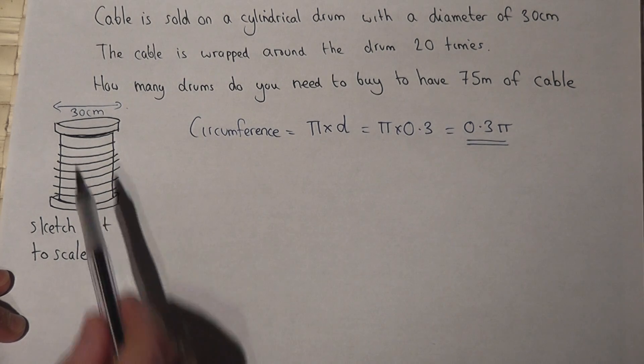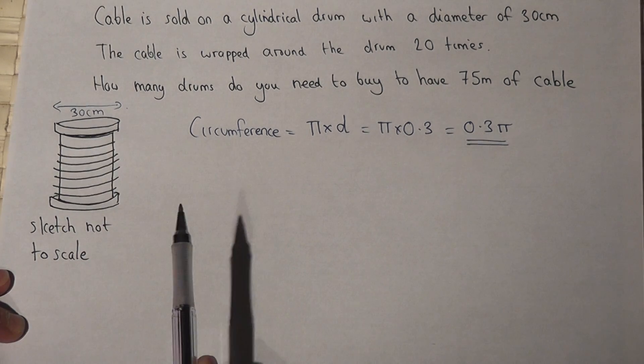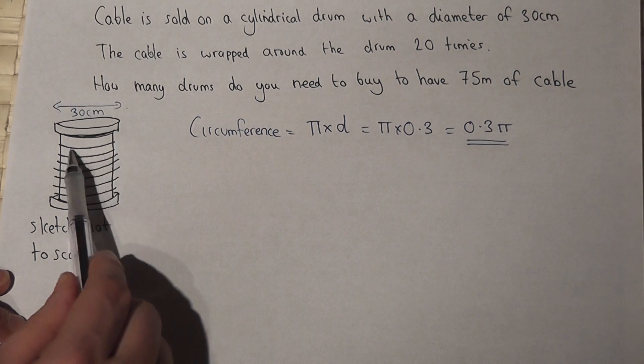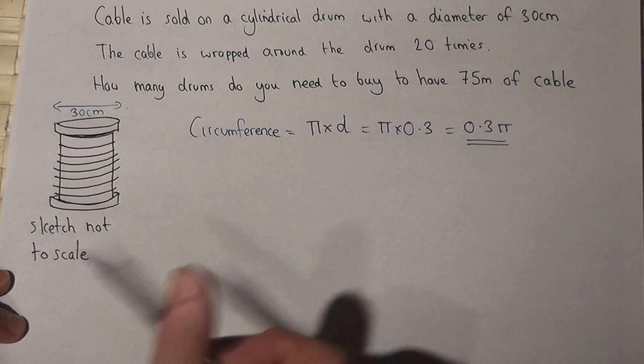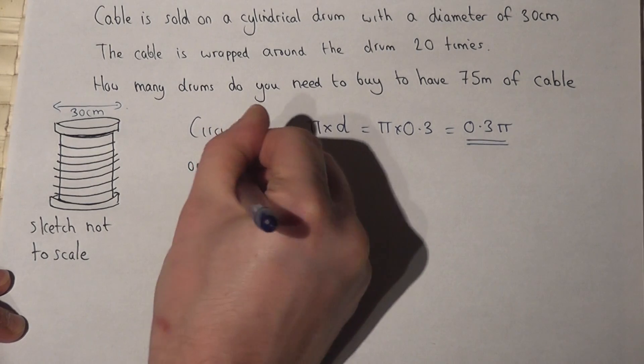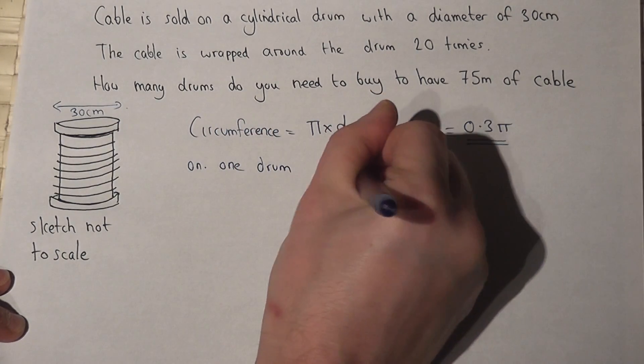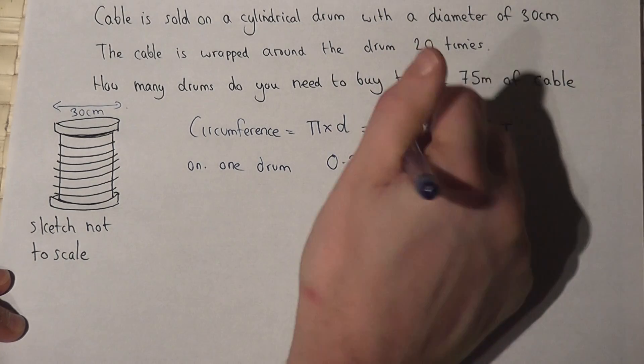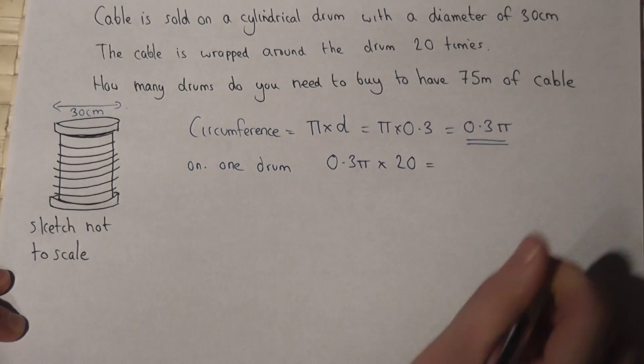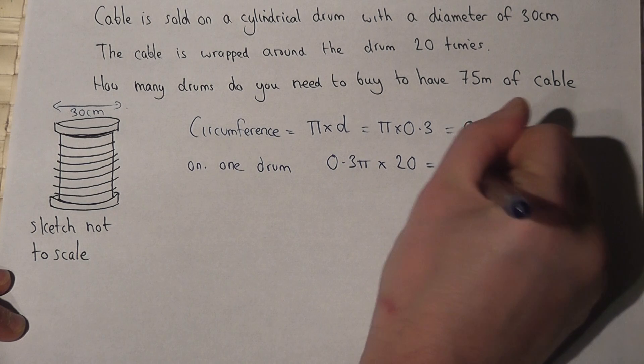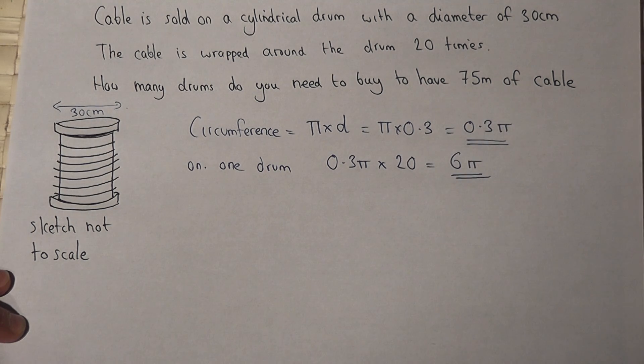So that's the amount of cable in one loop on one of the drums, but this is wrapped around 20 times, so on one drum there will be 0.3 pi times 20, which works out at 6 pi meters of cabling.